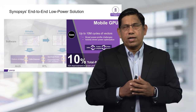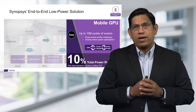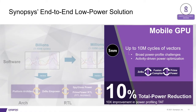Here is a case study of a customer doing a mobile GPU at five nanometers. Using technologies like Zeebu Empower, they were able to profile up to 10 million cycles of vectors, find the windows of interest, drive that information through Fusion Compiler to optimize power, and then verify everything with Prime Power, our golden power analysis tool. This approach — looking at it from software all the way to GDS — enabled them to achieve a 10 percent total power reduction.